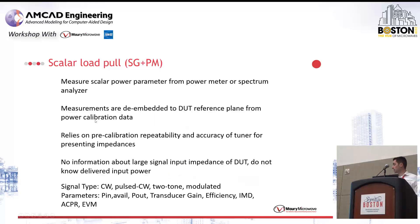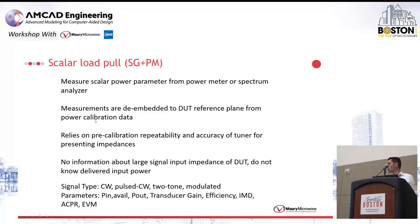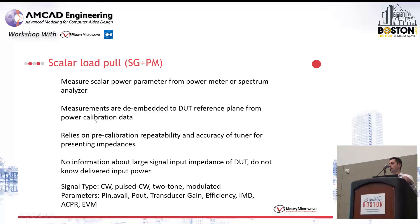To summarize: in a scalar load pull system, you measure scalar power using power meters or spectrum analyzers. The measurements are de-embedded to the DUT by using the S-parameters measured on the tuner offline. It relies on pre-characterization and also on the repeatability of the tuner — your tuner needs to be highly repeatable for accurate measurements. An important aspect, especially related to modeling, is that there is no information whatsoever about the large signal input impedance of the DUT. You know what your source power is and you match with your source tuner, but you don't know the input gamma of your DUT or the delivered input power to the device.